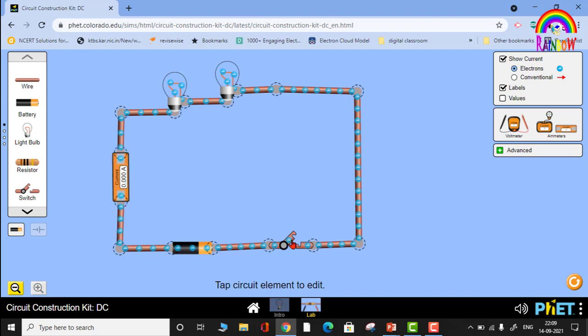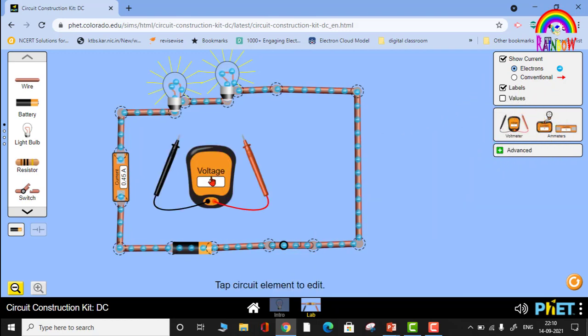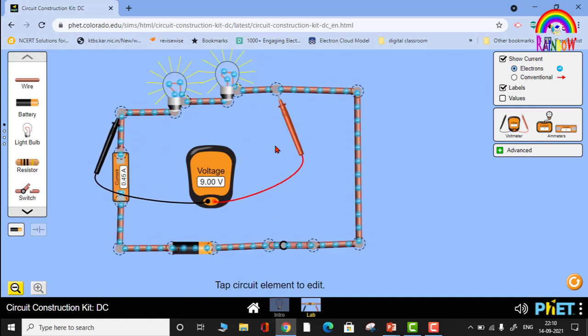Now let me take the voltmeter. Bring it and connect across these two ends in parallel. See, it is measuring the potential difference across these two ends. It is 9 volts.